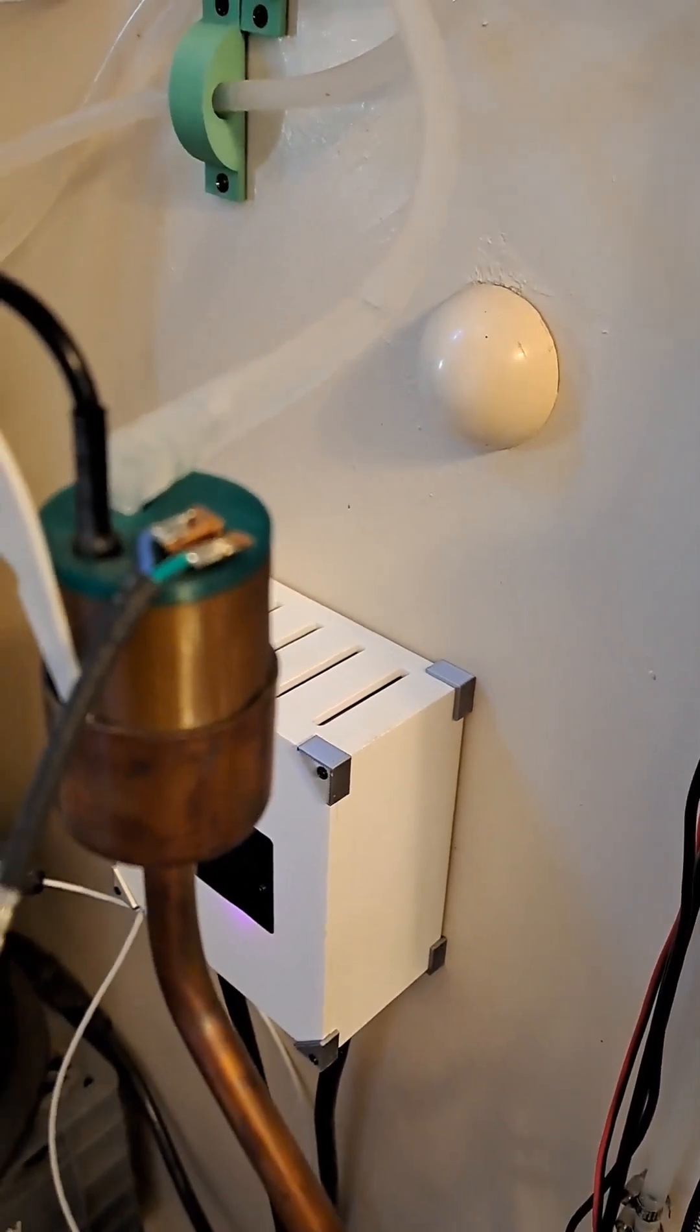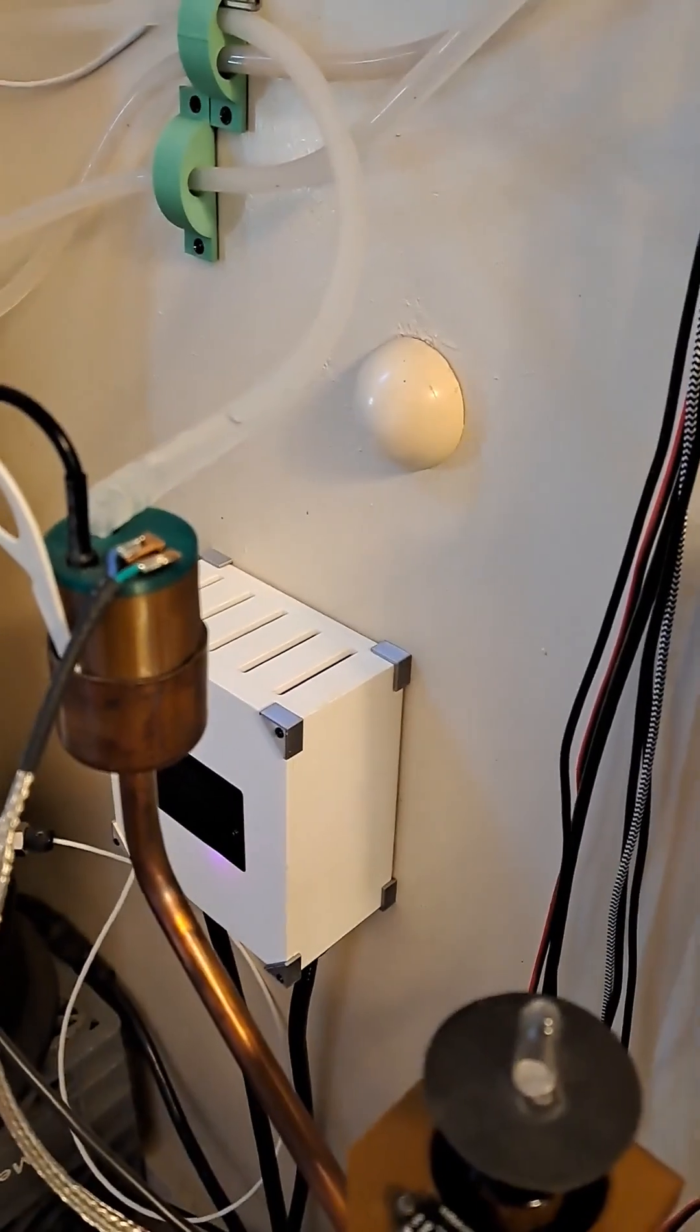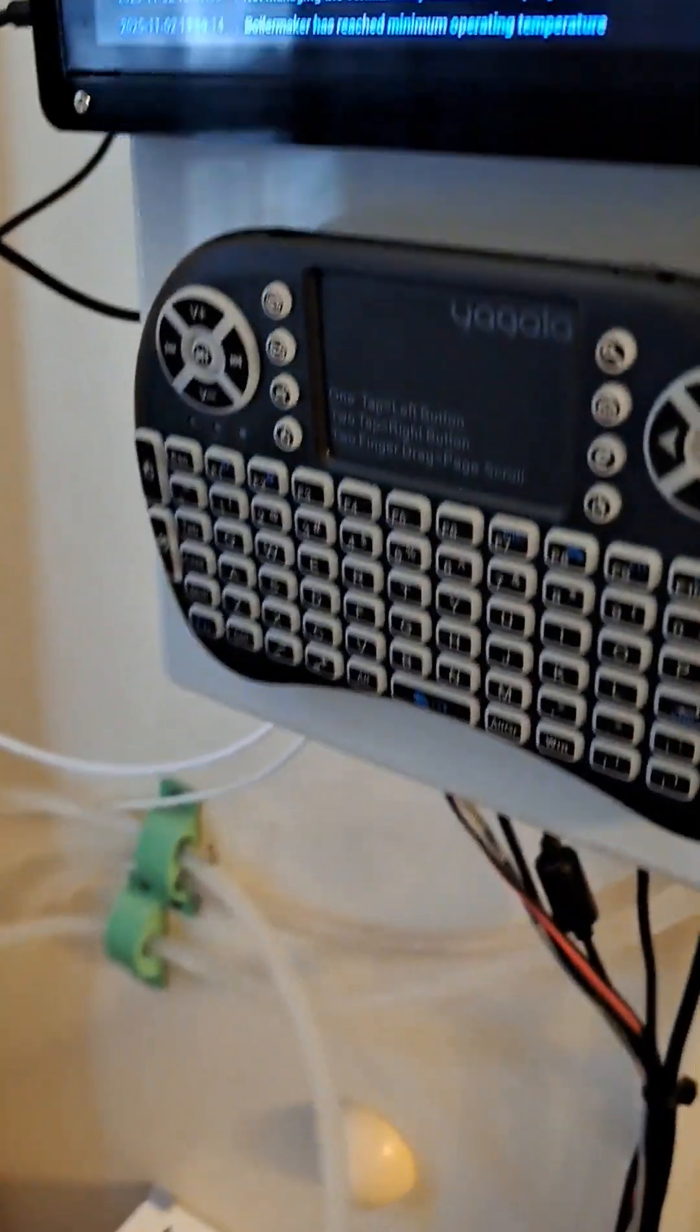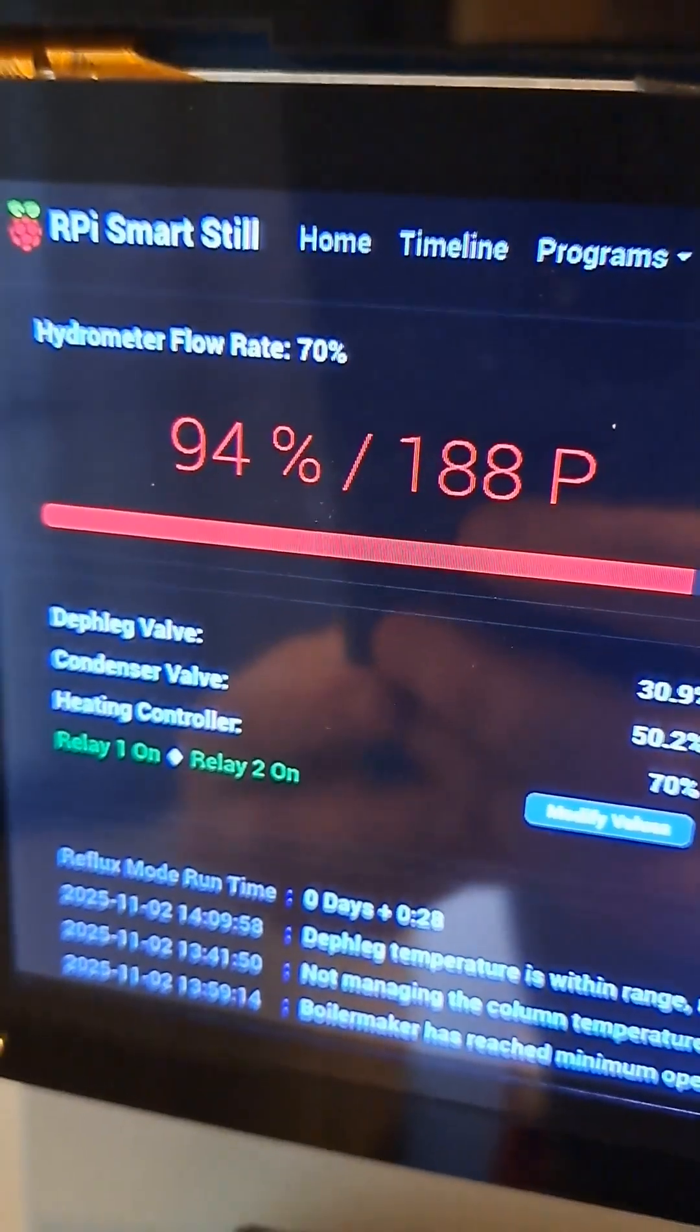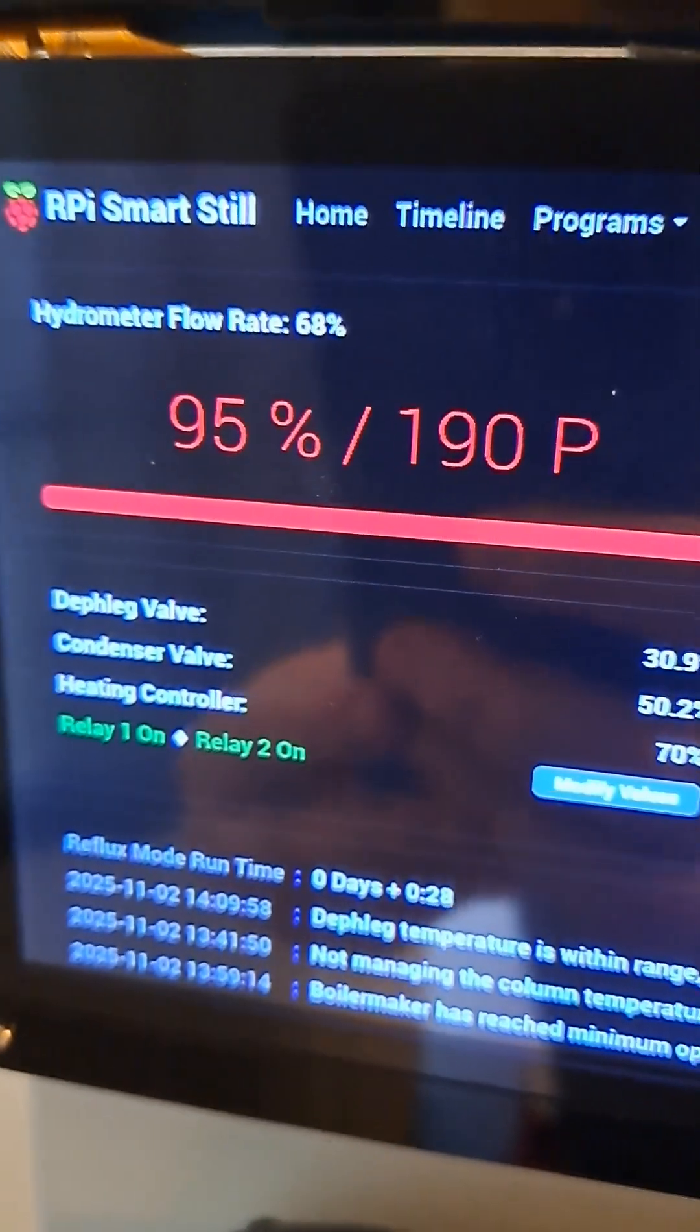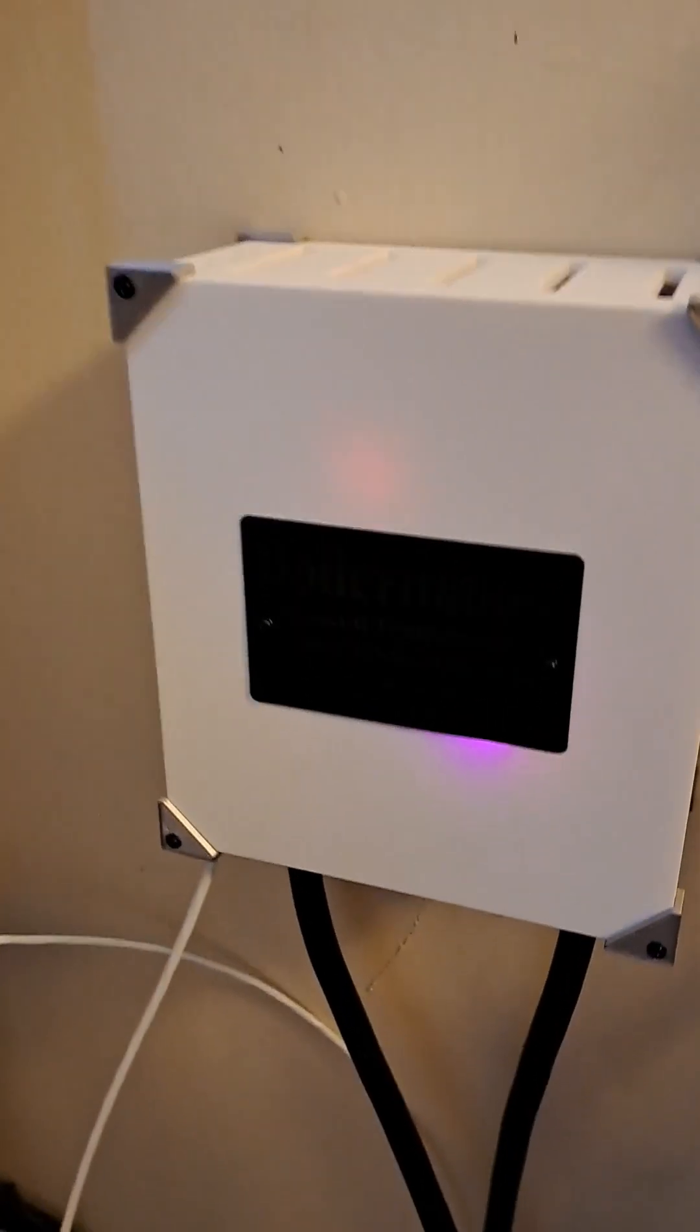That little sensor, it's a capacitive flow sensor, and that's how I'm able to tell the flow rate up there where it says hydrometer flow rate 68%. It's a capacitor.